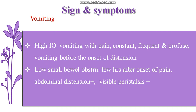In low bowel, distal region intestinal obstruction, vomiting starts a few hours after the onset of pain. There will be abdominal distension and visible peristalsis may or may not be present. In high intestinal obstruction, there is vomiting along with pain - constant, frequent, and profuse. In low small bowel obstruction, along with vomiting, there would be abdominal distension, however visible peristalsis may or may not be present.